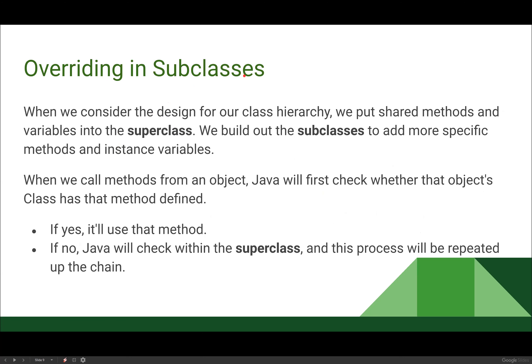When designing our class hierarchy, we put shared methods and variables into the super class, then build out subclasses to add more specific methods and instance variables. When we call a method from an object, Java first checks whether that object's class has that method defined. If it does, it uses that one. If not, it checks the super class, then moves up the chain. If that method call isn't found anywhere in the chain, Java will throw an error saying the method doesn't exist.